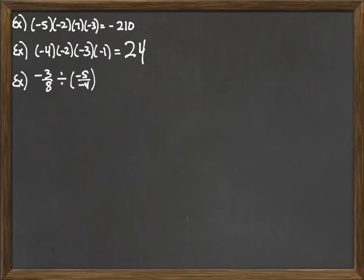In the next example we are dividing two fractions. Remember the first thing we need to do when we divide two fractions is change the division to a multiplication. So that will be keep negative 3 eighths, change the division to multiplication, and then flip that fraction so we'll have negative 3 over 8 times negative 5 over 4.